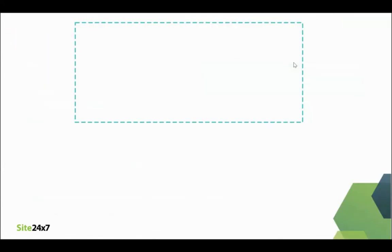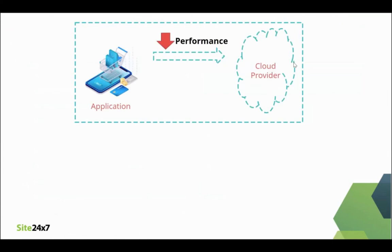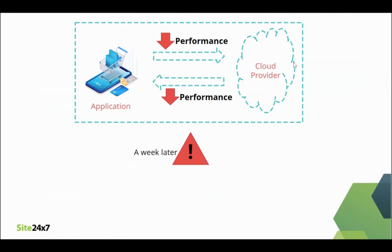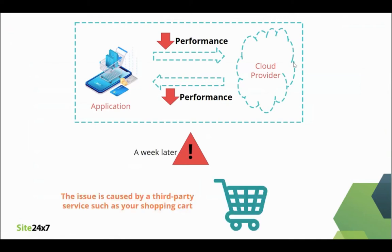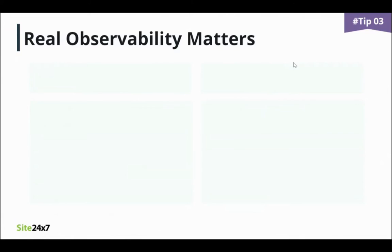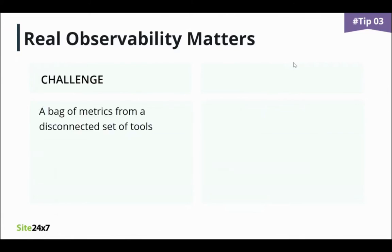Consider this typical situation. You point a finger at your cloud service because performance is not up to par. They point it back to your application, and ultimately you discover that the problem is caused by a third-party service such as your shopping cart — but it took you a week of effort to figure that out. In the meantime, customer satisfaction suffers. Real observability matters. A bag of metrics from a disconnected set of tools is not enough for a modern IT environment. Understanding what's happening across your servers and applications and quickly deriving meaning helps you pinpoint issues faster and make smarter decisions.